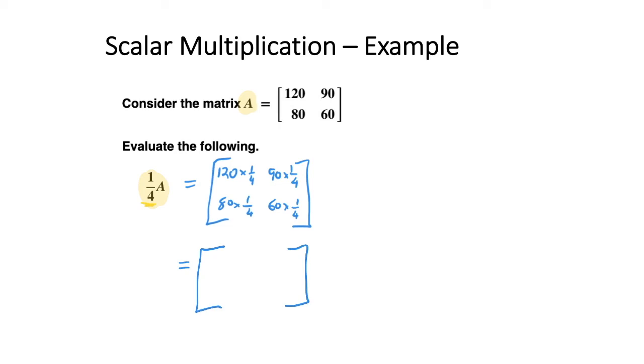120 multiplied by one quarter is 30, 90 multiplied by one quarter is 22.5, 80 multiplied by one quarter is 20, and 60 multiplied by one quarter is 15.